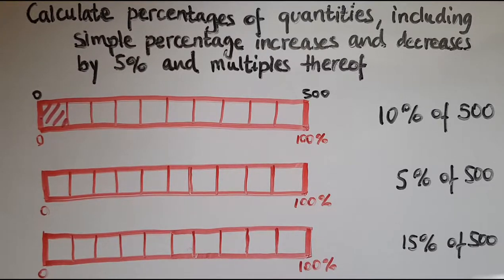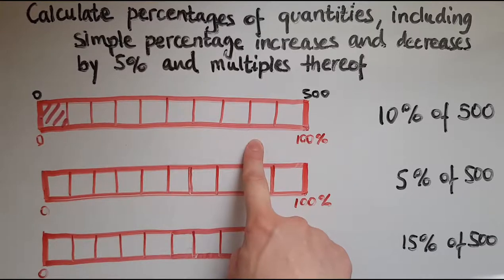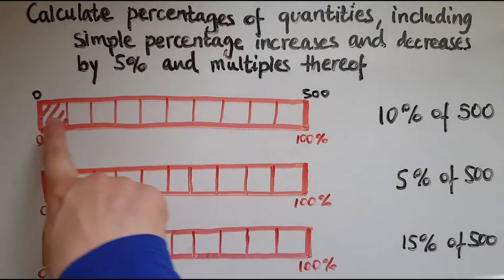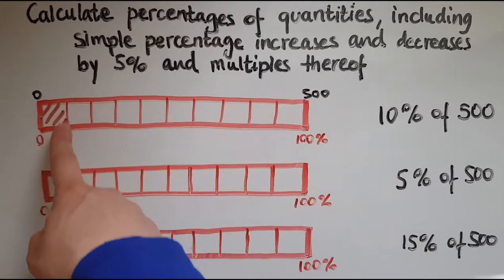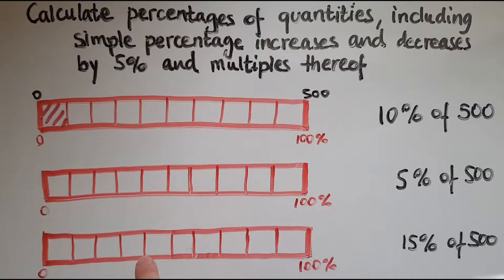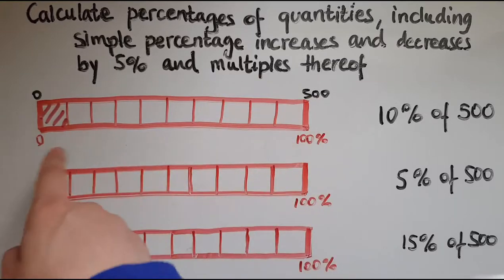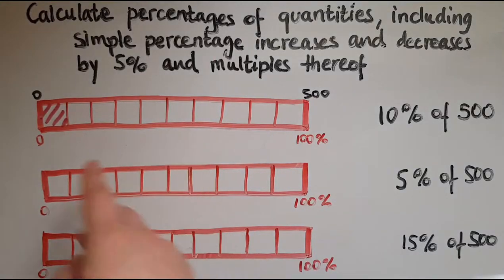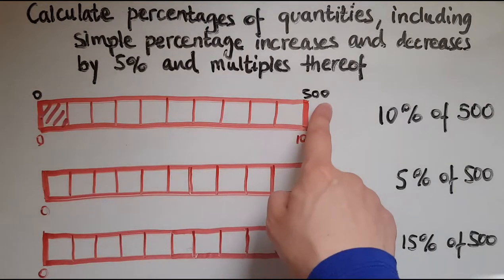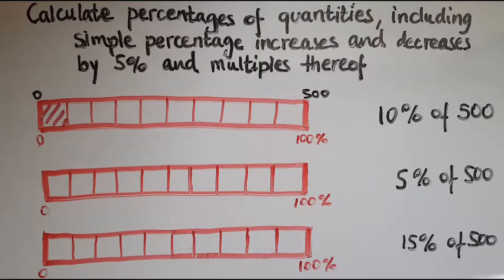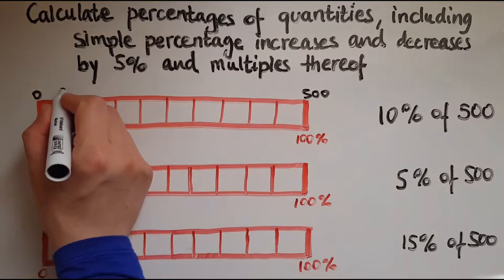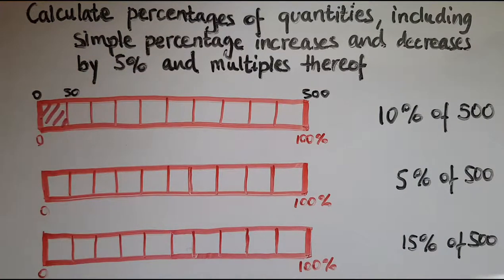Now this represents 10% of the bar, but also 10% of the amount. So this is 500. 10% will be a tenth of 500. So I need to divide the 500 by 10 as well, just like I did with the bar. So 100 divided by 10 gives me 10. 500 divided by 10 gives me 50. So that means that I'd have 50 here.